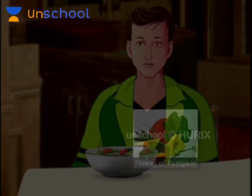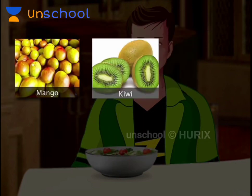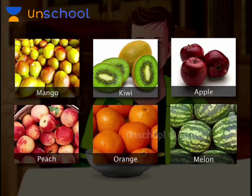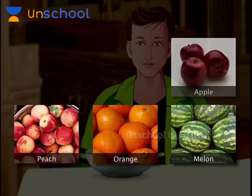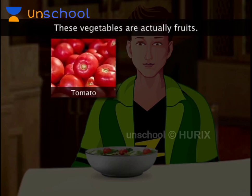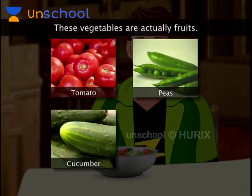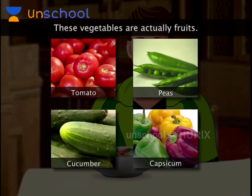Juicy fruits such as mangoes, kiwi fruit, apples, peaches, oranges and melons are familiar to most of us. Vegetables such as tomato, peas, cucumber and capsicum are actually fruits.